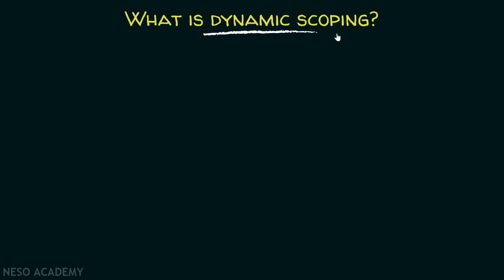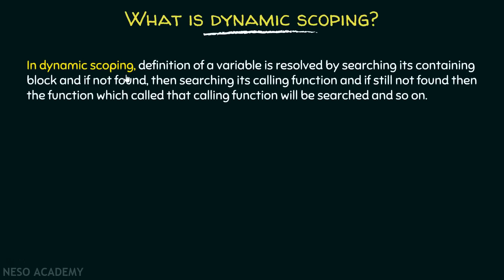What is dynamic scoping? In dynamic scoping, the definition of a variable is resolved by searching its containing block. And if not found, then by searching its calling function. And if still not found, then the function which called that calling function will be searched, and so on.